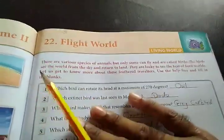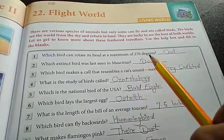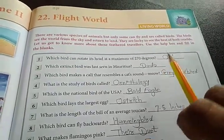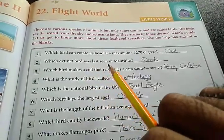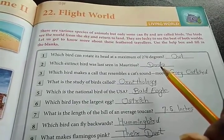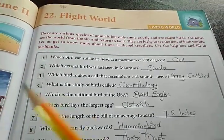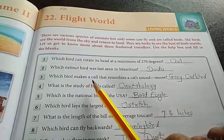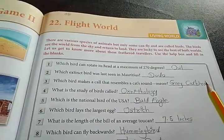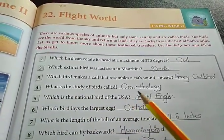Use the help box and fill in the blanks. First question: which bird can rotate its head at maximum of 270 degrees? That bird is Owl. Next, which extinct bird was last seen in Mauritius? That bird was Dodo. That bird was extinct because of unlimited hunting and poaching. Third question: which bird makes a call that resembles a cat sound, meow? That is grey catbird. Fourth, what is the study of birds called? It's called ornithology.